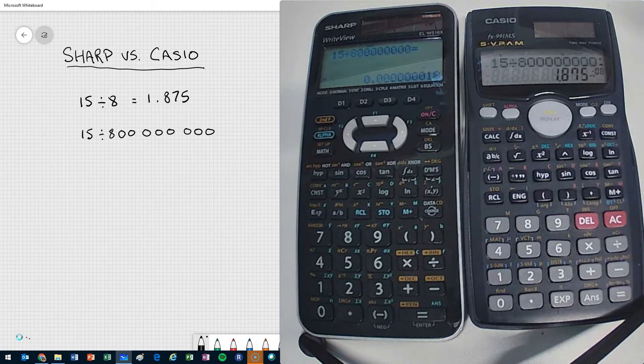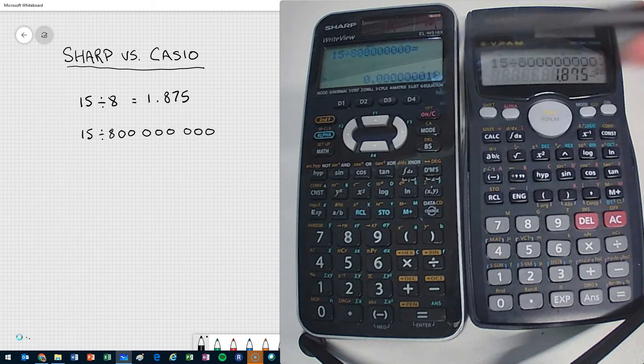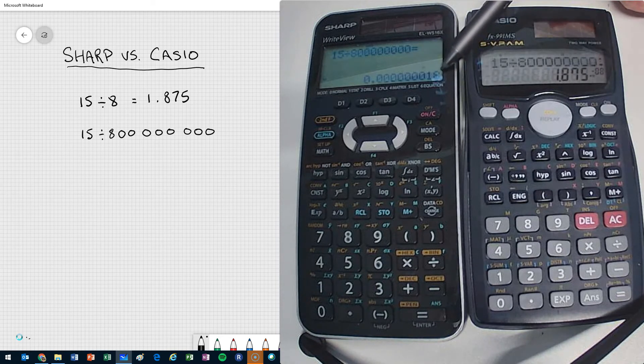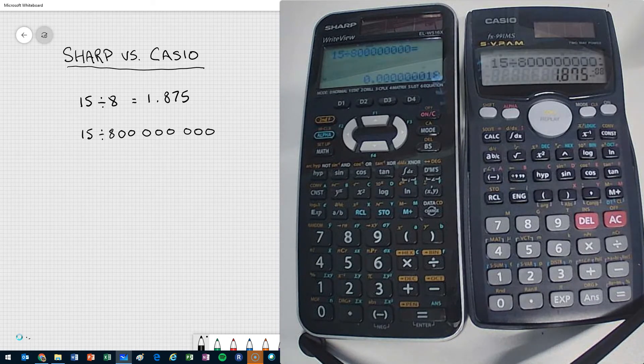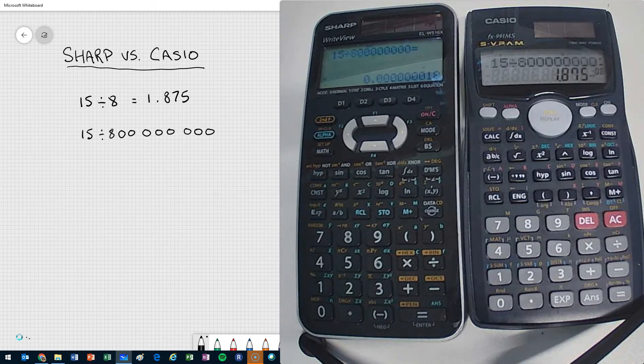So already we're off by, if we just wrote out that number on the SHARP, you're off, you're missing your 7.5 at the end. Here's where it gets really bad.